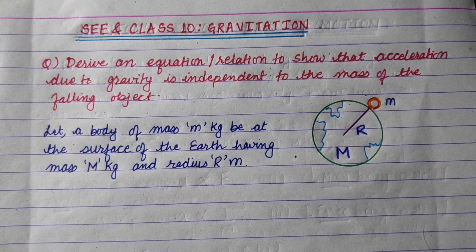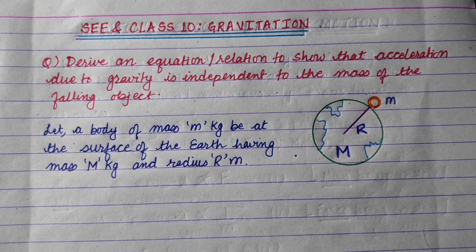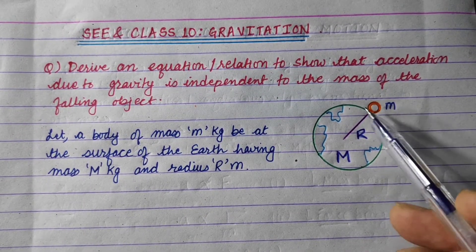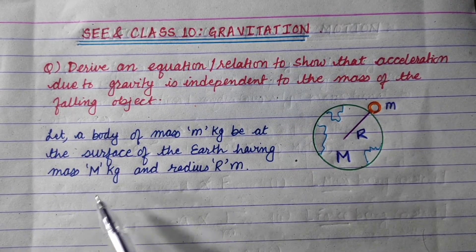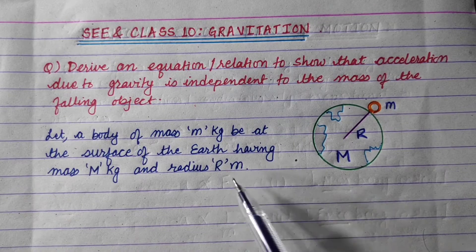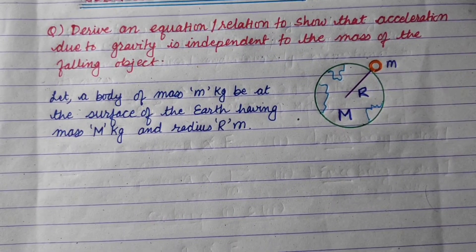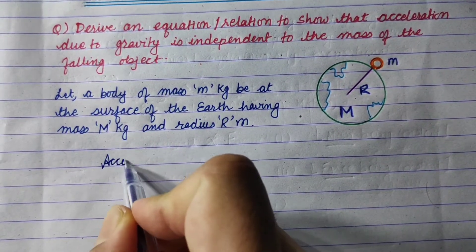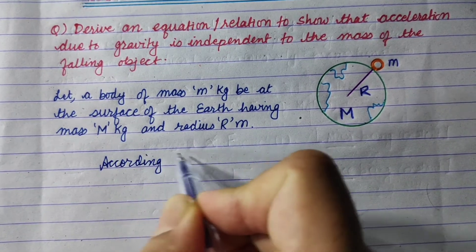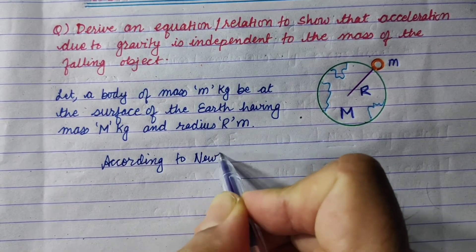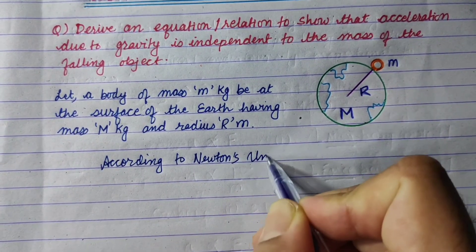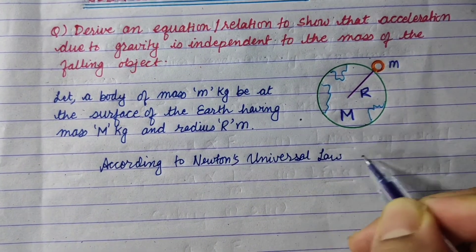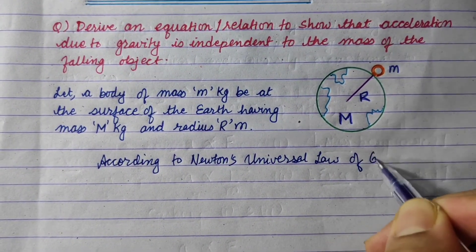To derive this experimentally, let a body of mass m kg be on the surface of the earth having mass capital M kg and radius r meter. According to Newton's universal law of gravitation: